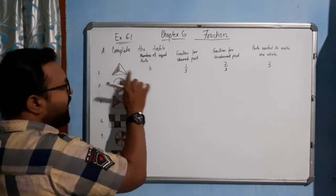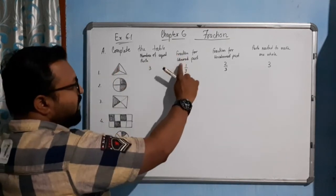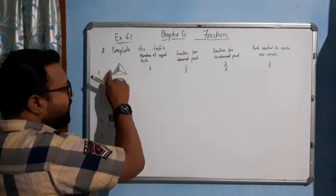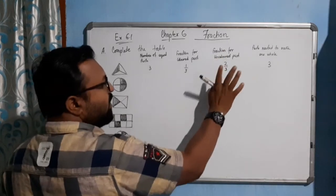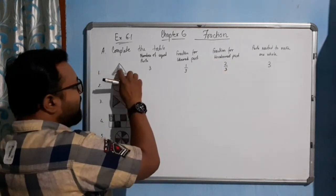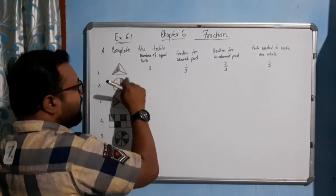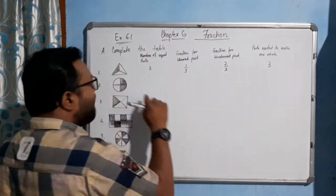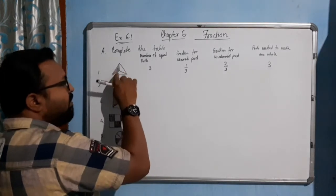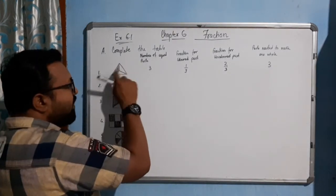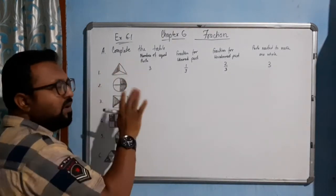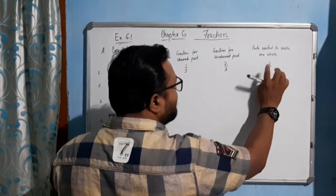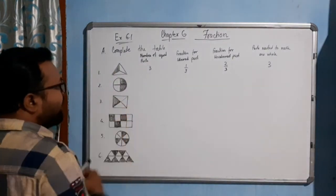How many equal parts do we have? 1, 2, 3 — so it is 3. Fraction of colored part: only one part is colored out of 3 parts, so 1/3. Fraction of uncolored part: these two parts are not colored out of 3 parts, so 2/3. Parts needed to make one whole: all three parts are required — if I shade all three parts it will become whole, so 3.